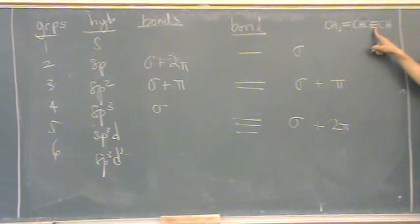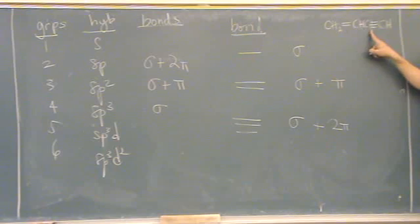That is a double and a triple bond. So the double, there is a pi from that one, and another 2 pi's from that one, a total of 3 pi bonds here.